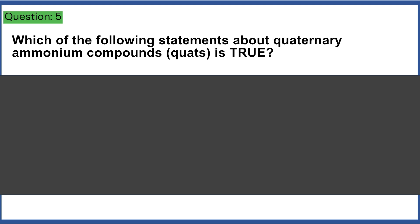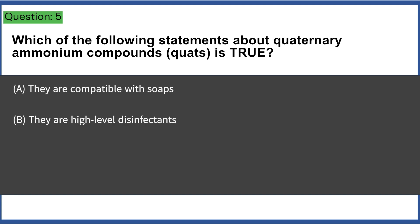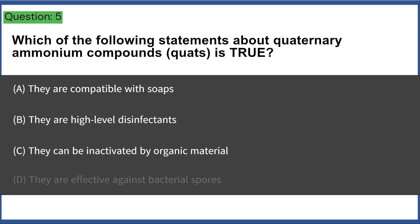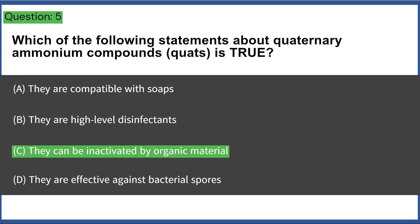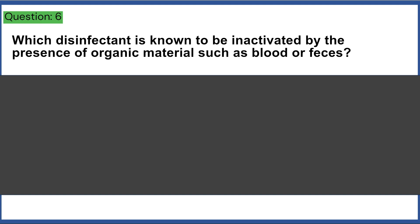Which of the following statements about quaternary ammonium compounds (QUATs) is true? a) they are compatible with soaps, b) they are high-level disinfectants, c) they can be inactivated by organic material, d) they are effective against bacterial spores. Answer: C, they can be inactivated by organic material.